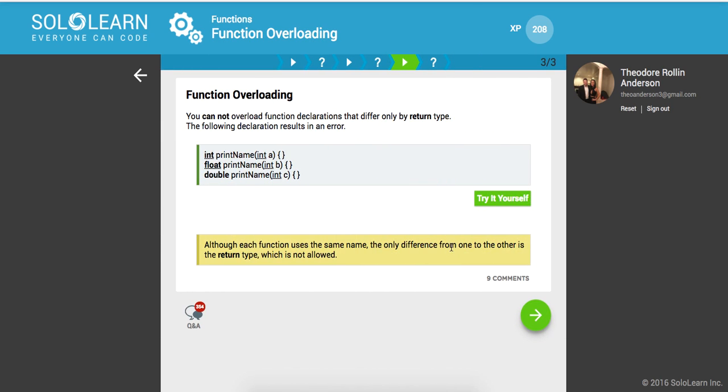So you cannot overload function declaration to the different only by return type. So here's a good example, right? Although each function uses the same name, the only difference from one to the other is the return type, which is not allowed. So they need to have a different return type and a different parameter.